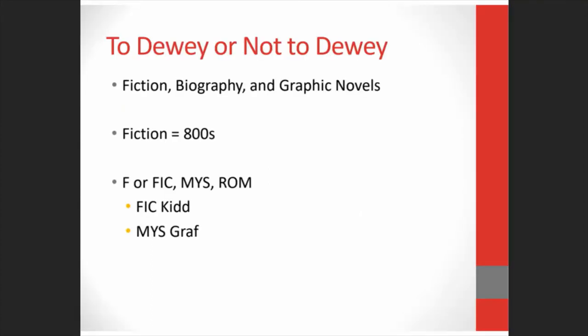There are times that we don't use Dewey for fiction, biography, and also for graphic novels. When Dewey first created the DDC, the world of knowledge looked very different, including fiction. Technically, fiction could go under the 800s, but that would get really crowded really quickly. So instead, you'll usually see an F or FIC or maybe even a genre code with the first few letters of the author's last name, which allows for unlimited growth and browsing.